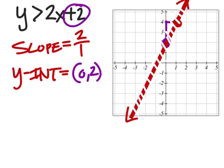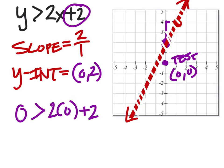And then, what point should we test? 0, 0 sounds good. So we're going to test 0, 0 in the inequality. So we got y now is 0. Is that greater than 2 times 0 plus 2? So 0 greater than 0, 0 greater than 2. That's false.